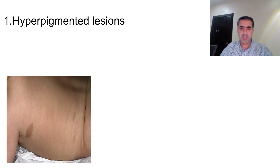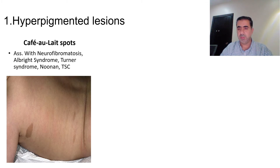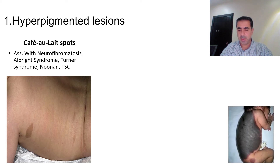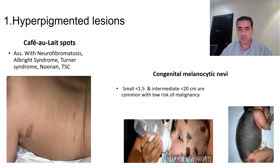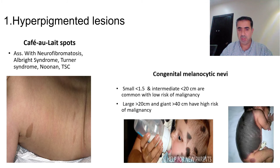Café au lait spots are associated with neurofibromatosis, Albright syndrome, Turner syndrome, Noonan syndrome, and tuberous sclerosis (TSC). Congenital melanocytic nevi can be small (less than 1.5 cm) or intermediate (less than 20 cm) — these are common with low risk of malignancy. The large ones (more than 20 cm) and giant ones (more than 40 cm) have a high risk of malignancy.